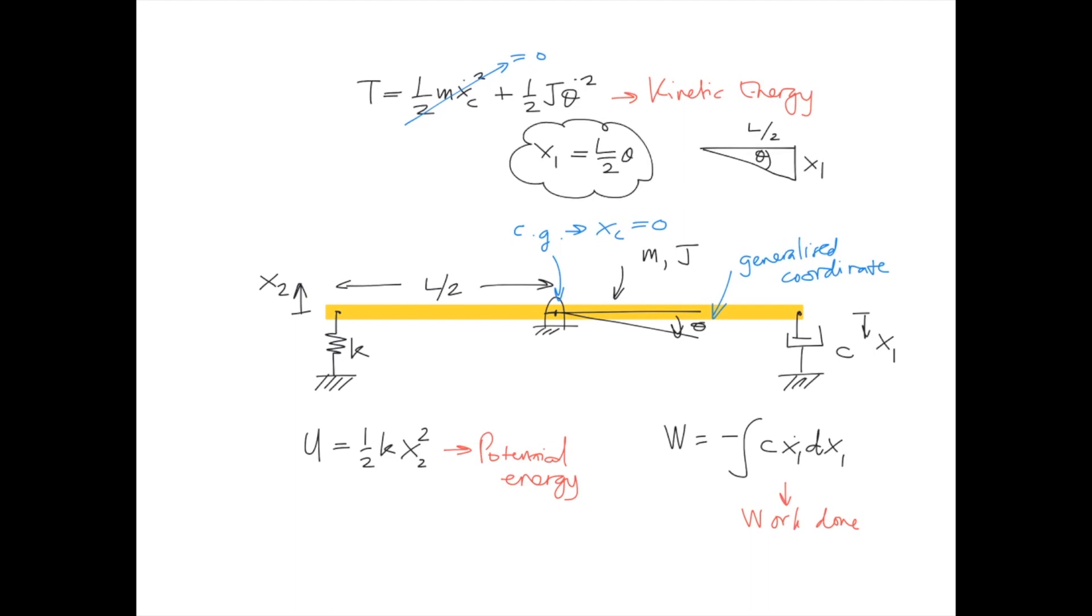Now X2 has also the same condition with X1, where the length of rotation is also L over 2. We can also draw the triangle diagram to help us visualize the math, so X2 is L over 2 multiplied by theta.